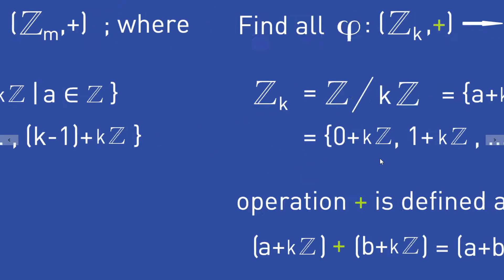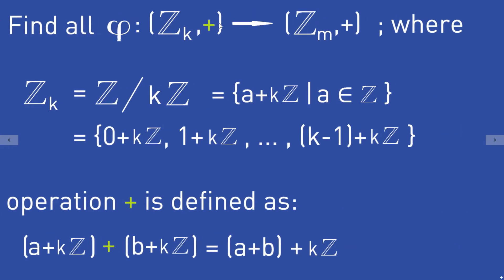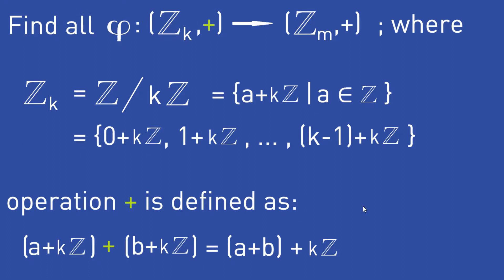The operation plus on the residual class group Z_K is defined the following way: (A + KZ) plus (B + KZ) is equal to (A + B) + KZ. This is how the operation plus is defined on the residual class group Z_K.